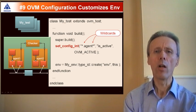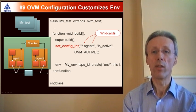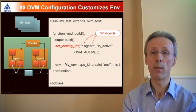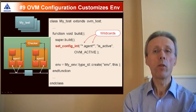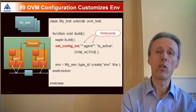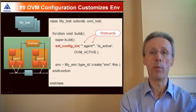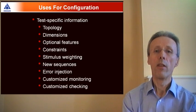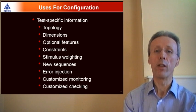Number ten: OVM uses configurations to customize verification components in the verification environment. OVM configurations perform parameterization, but that parameterization is a lot more flexible than can be achieved using Verilog parameters. There are many possible uses for configurations.